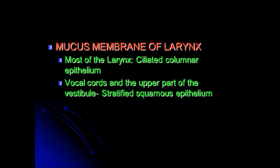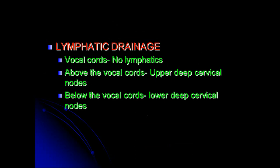The mucous membrane of the larynx is, in the majority, ciliated columnar epithelium, whereas the vocal cords and the uppermost part of the vestibule are lined by stratified squamous epithelium. The larynx has an interesting lymphatic drainage: the vocal cords have very sparse or no lymphatics and hence act as a watershed. The lymphatics above the level of the vocal cords drain into the upper deep cervical lymph nodes, whereas below the vocal cords they drain into the lower deep cervical lymph nodes.